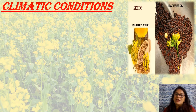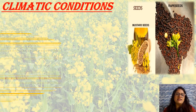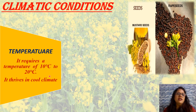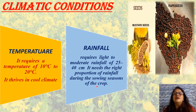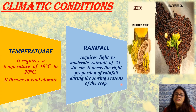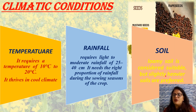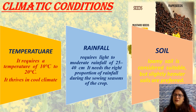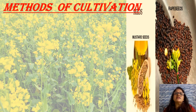Now we will discuss the climatic conditions of mustard seeds. Temperature: it requires 10°C to 20°C and thrives in cool climate. Rainfall: 35 to 40 centimeters of moderate rainfall is considered best, and a right proportion of rainfall during the crop season is needed. Soil: loamy soil is considered suitable, but slightly heavier soils are preferred.